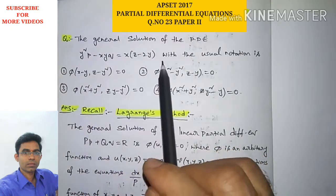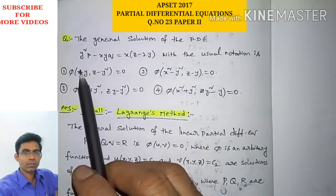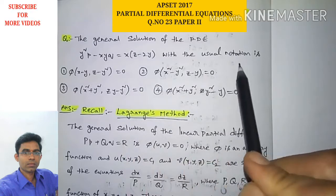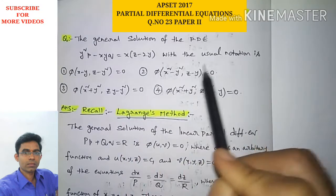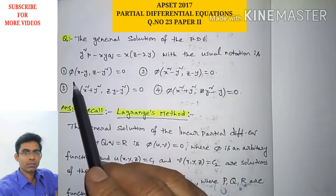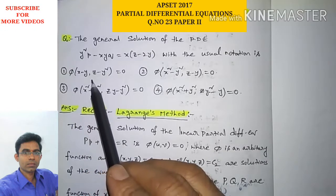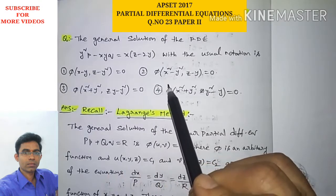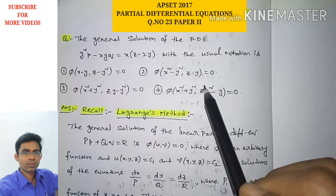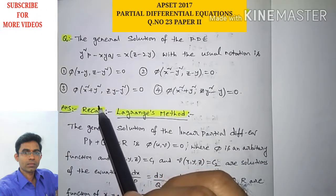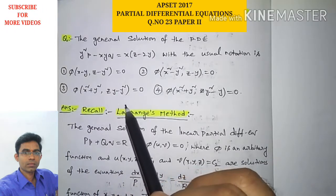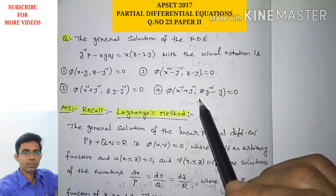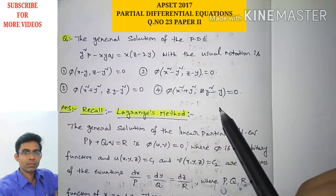The question is: the general solution of the partial differential equation y²p minus xy·q equals x(z minus 2y), with the usual notation, is? The four options are: option 1, φ(x minus y, z minus y²) = 0; option 2, φ(x² minus y², z minus y) = 0; option 3, φ(x² plus y², zy minus y²) = 0; and option 4, φ(x² plus y², zy² minus y) = 0.